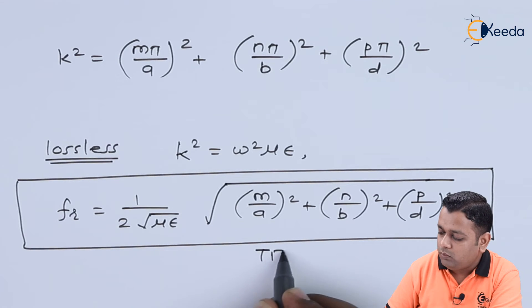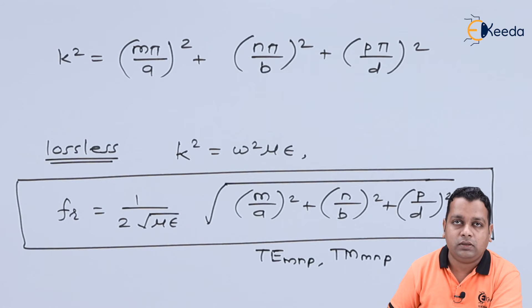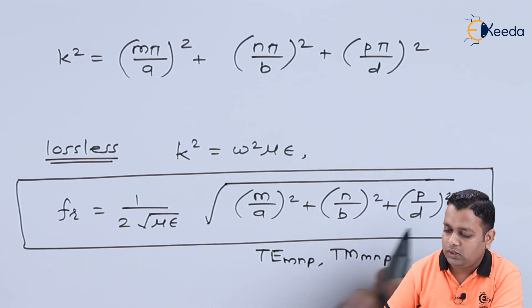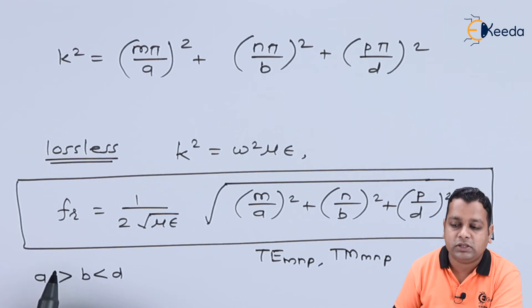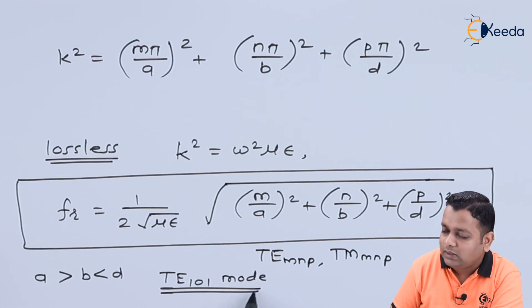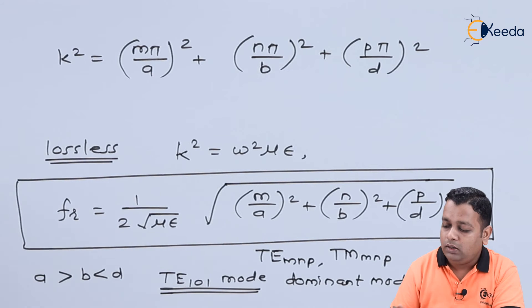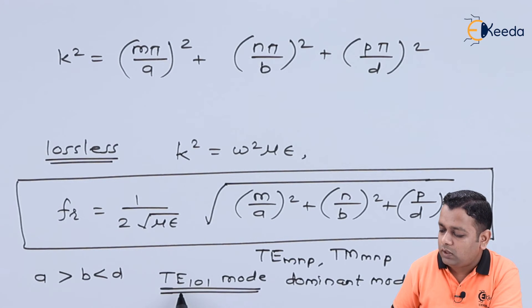When we have dimensions a, b, and d with b smaller than d and d smaller than a, the TE₁₀₁ mode is called the dominant mode. As established in the last lecture, the mode offering the lowest possible value of resonant frequency is called the dominant mode. For the rectangular cavity resonator, the combination m=1, n=0, p=1 — that is TE₁₀₁ — is the dominant mode.